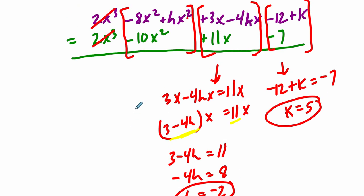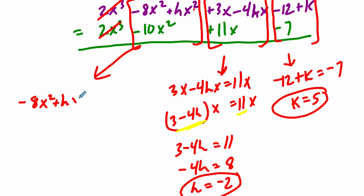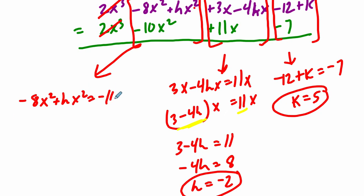But we should also make sure that in this case, h, this h pops up again here, is still negative 2. We get negative 8x squared plus hx squared equals negative 10x squared.